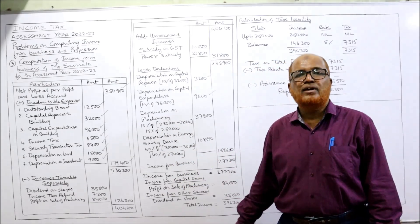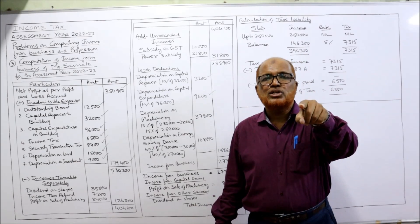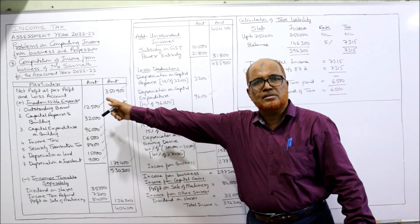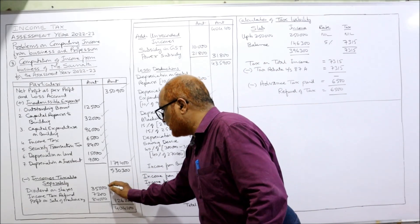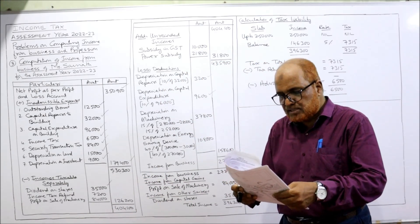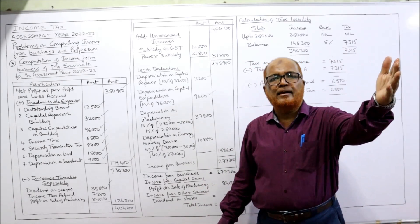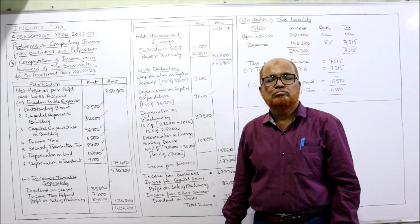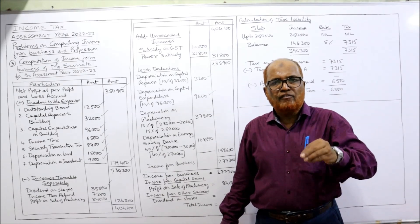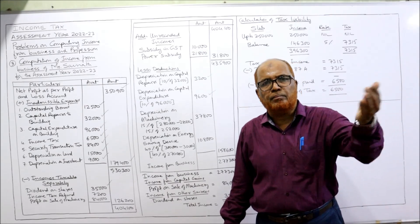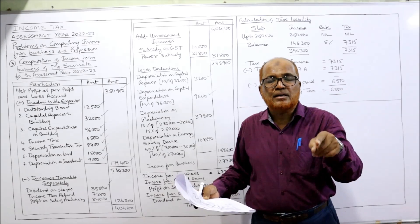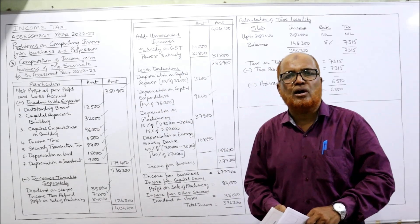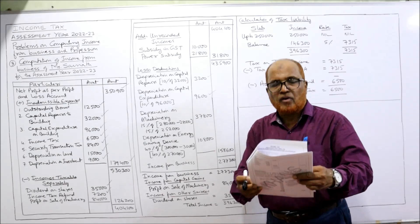Now see the credit side of the profit and loss account. Gross profit — it's a business income. Dividend on shares: remember, dividend on shares is taxable under income from other sources, not under income from business. So we deduct dividend on shares ₹35,000. Next, income tax refund: income tax paid is not allowed as deduction, so income tax refund is not an income at all — our money is being returned. Income tax refund is not taxable income, so deduct it.